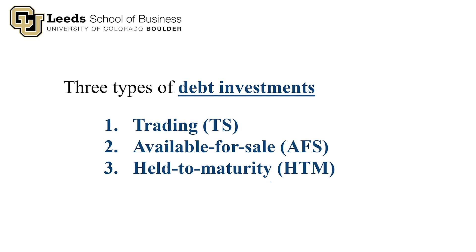These categories relate to how long management expects to hold the debt security before reselling it. A trading security is held for a very short amount of time. Available for sale is somewhere between short-term and holding until maturity. Held to maturity means management plans to buy the bond and hold it to its maturity date — they never plan to sell it. I'll abbreviate these as TS for trading, AFS for available for sale, and HTM for held to maturity.